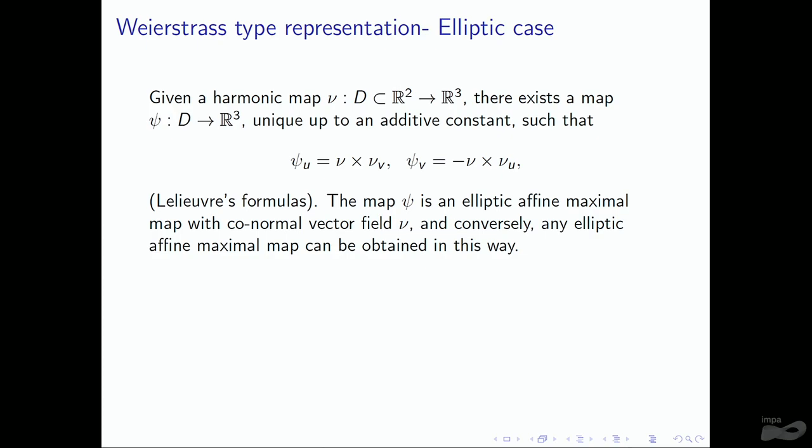This class of surfaces has a Weierstrass-type representation. In the elliptic case, you start with a harmonic map N from R² to R³, where each coordinate is harmonic. Then you can define an immersion by the Lelieuvre formula: the derivative with respect to one parameter U is the cross-product of N and N_V, and the derivative with respect to V is minus N cross-product N_U. If we start with this harmonic map, we obtain the elliptic affine-maximal map with conormal vector field N. Conversely, any elliptic affine-maximal map can be obtained in this way.